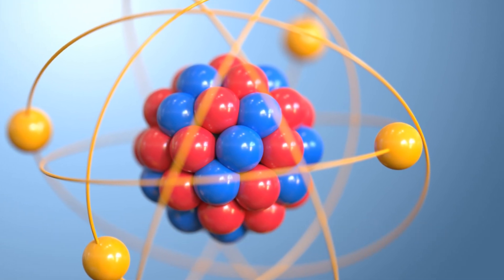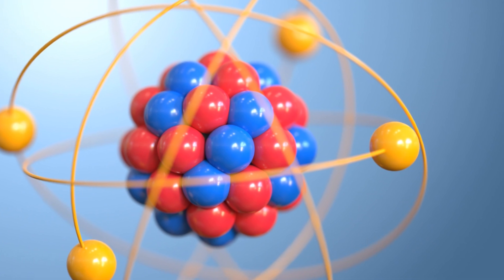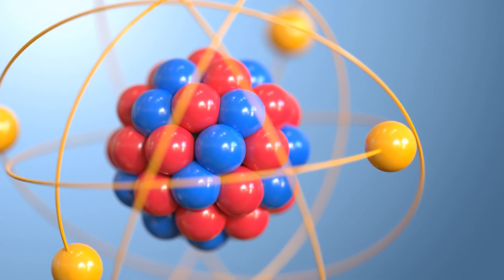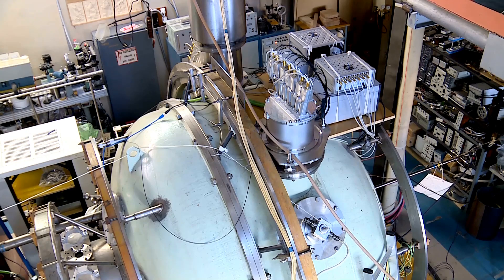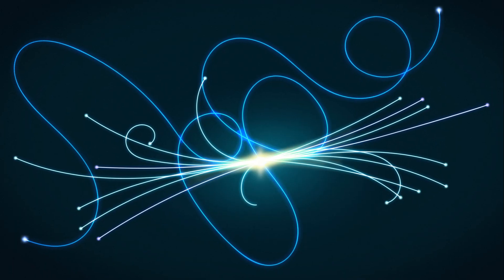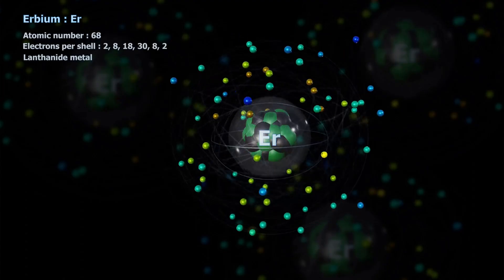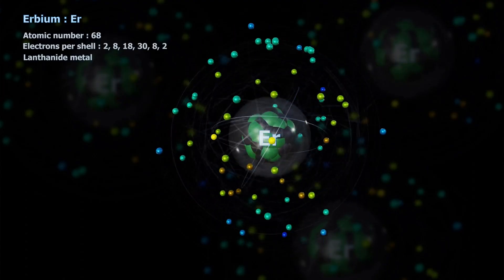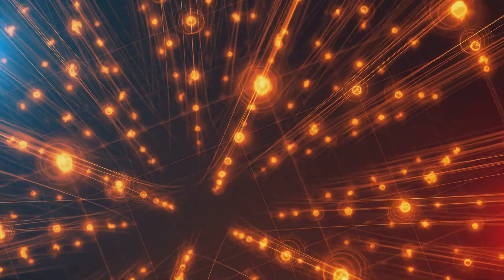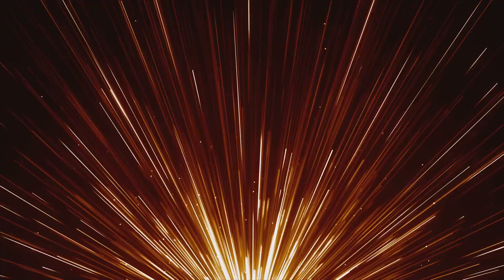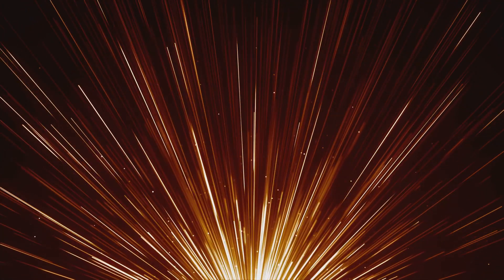For decades, the proton was envisioned as a simple entity composed of three quarks: two up quarks and one down quark. This simplistic picture crumbled as physicists probed deeper into the proton's structure. They discovered a bustling sea of particles in constant flux. The three valence quarks are just the tip of the iceberg. The proton teems with virtual quark-anti-quark pairs, popping in and out of existence. These transient particles, governed by Heisenberg's uncertainty principle, add to the proton's mass.